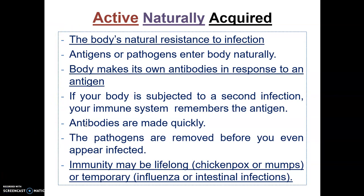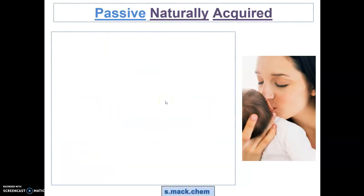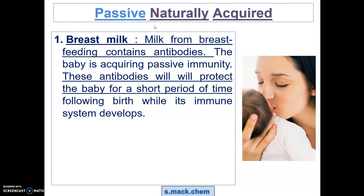Active immunity is where the body makes its own antibodies. Passive naturally acquired immunity is where the body is supplied with ready-made antibodies. For example, with a mother and a baby, antibodies are supplied to the baby in the form of breast milk. The baby, on consuming the breast milk, acquires a form of passive immunity, and these antibodies protect the baby for a short time following birth while its own immune system develops.